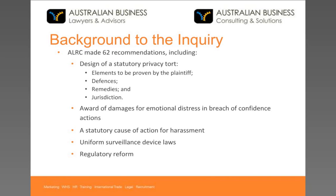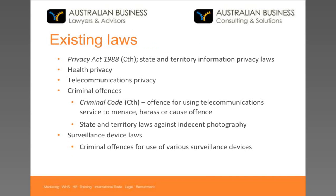In the current inquiry, the ALRC made 62 recommendations, including the design of the tort, elements the plaintiff would need to prove, defences, remedies, and jurisdiction — whether it should be a federal or state tort. We also made recommendations about awarding damages for emotional distress, breach of confidence actions, and a statutory cause of action for harassment. The breach of confidence and harassment recommendations were only if the privacy tort were not enacted — they're an alternative to a privacy tort. We also made some recommendations about surveillance device laws and regulatory reform.